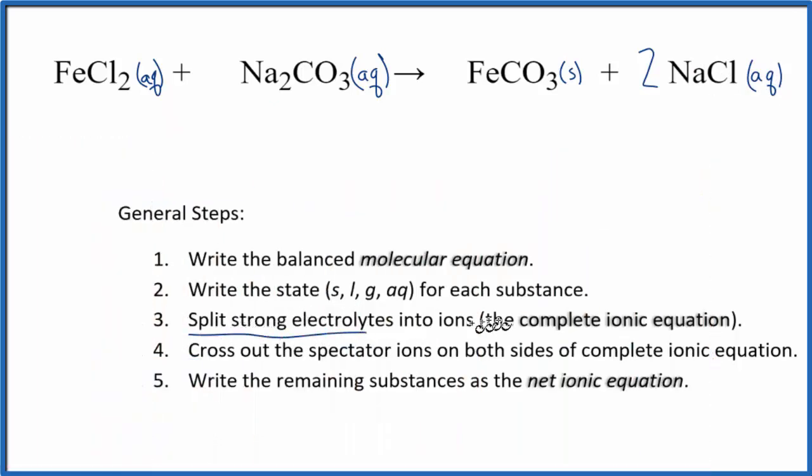Next, we're going to split the strong electrolytes into their ions, and this will give us the complete ionic equation. So to do that, we need to know the charge on each of these elements here. Chlorine, that's always a 1 minus. So if we have two of them, the iron has to be a 2 plus. Iron's a transition metal, so it can have different ionic charges. Sodium's in group 1, that's a 1 plus ionic charge. And the carbonate ion, you should remember that that's always 2 minus.